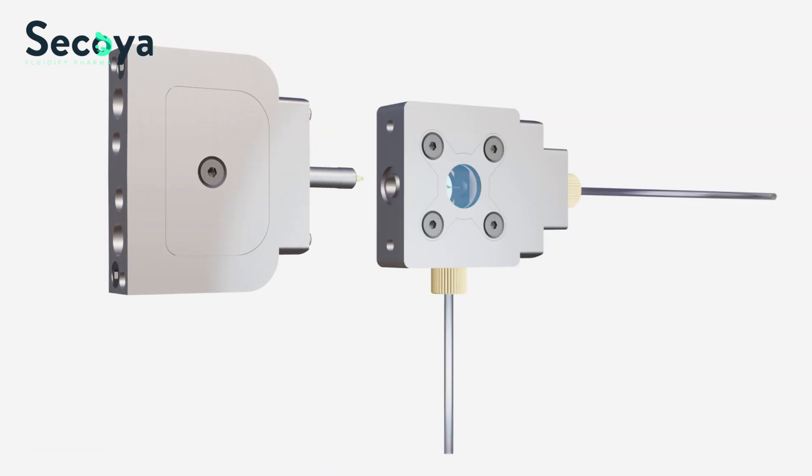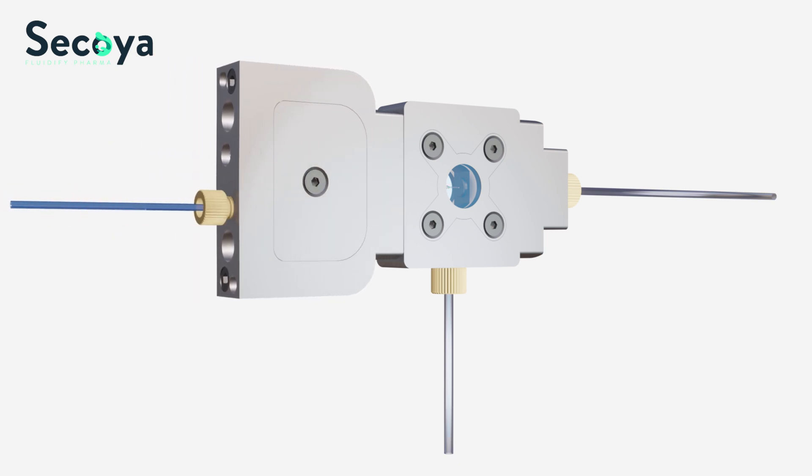The RayDrop device can produce double emulsions by simply replacing the inlet insert with an insert that can carry two liquids. One is called the core phase and the other the shell phase.